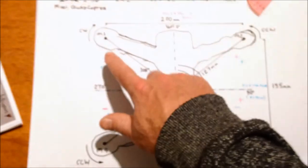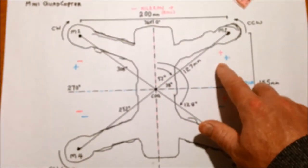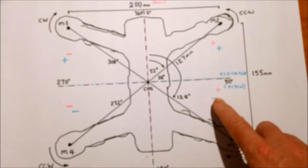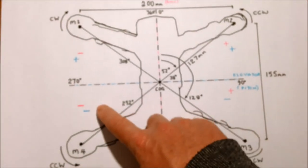So each quadrant has that setting: plus minus, plus plus, plus minus, minus minus.